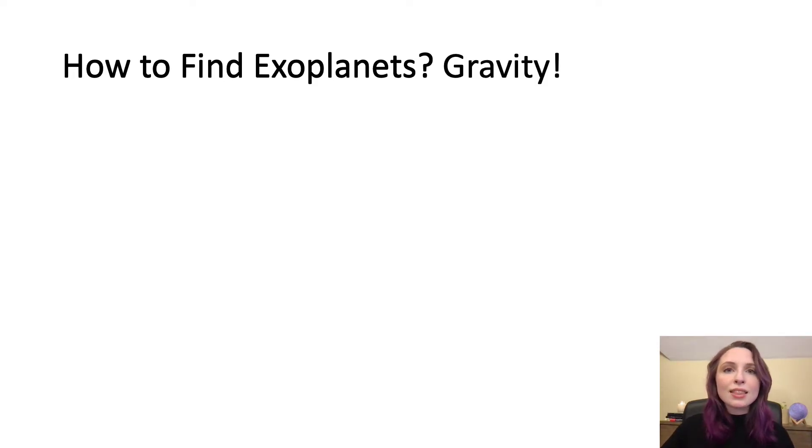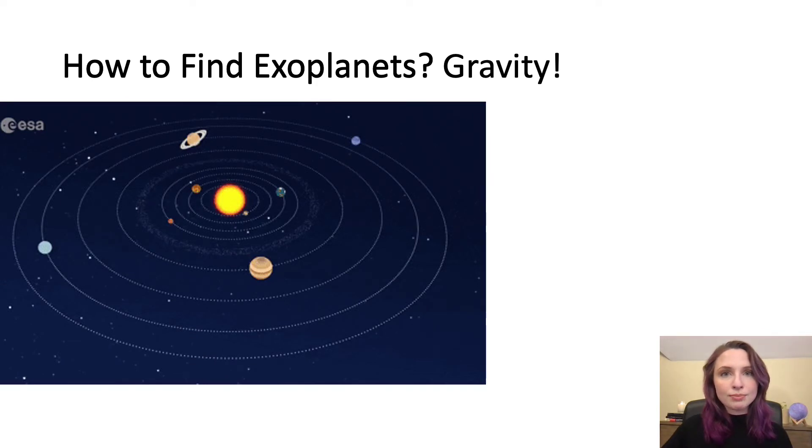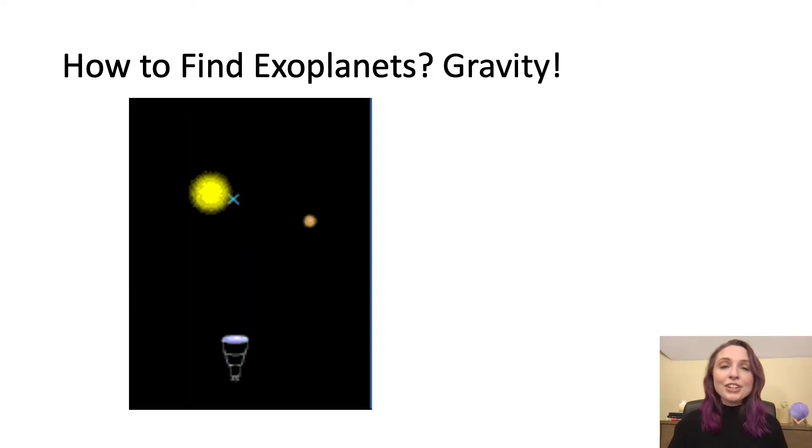Now we always say that the planets orbit around the sun. And that's true. But when you get down to the nitty gritty details, actually, the sun and the planets orbit around each other. Here you can see a small planet going in a wide circle around a star. And you can also see that star is also going around in a much smaller circle.